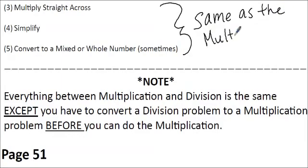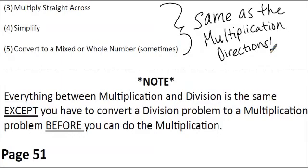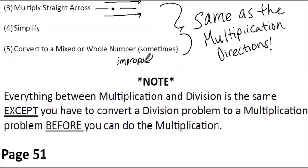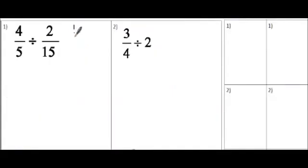Everything is the same except when you get them into fractional form, you need to convert it to a multiplication problem, and then you follow all the same steps as you do when multiplying fractions and mixed numbers. We're going to multiply straight across — numerator times numerator, denominator times the denominator. We're going to simplify if necessary, and then convert to a mixed or whole number. You can't convert to a mixed or whole number if you have a proper fraction — only if you have an improper fraction. We need to follow the five steps that are on the previous page.